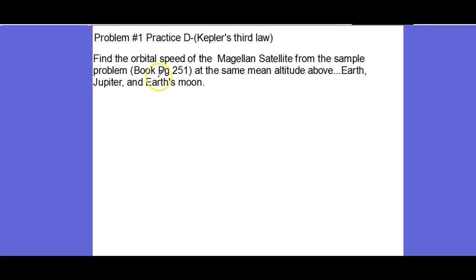It has you go through the problem in the book with Venus and then it wants to know the orbital speed, which is T. I'm going to show you the equation in a minute. You do it in the book for Venus, and then we're going to practice doing Earth, Jupiter, and Earth's moon.